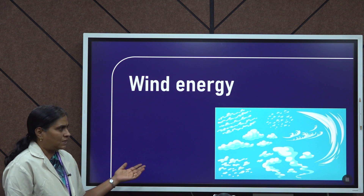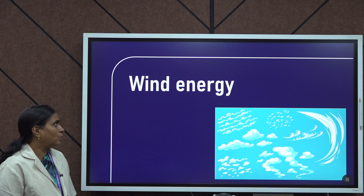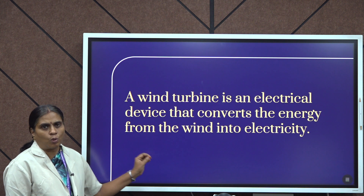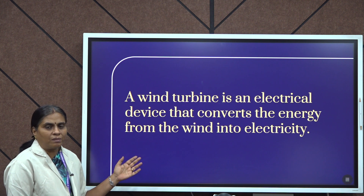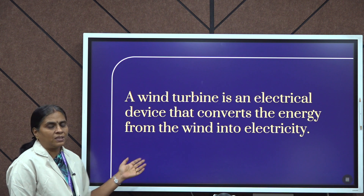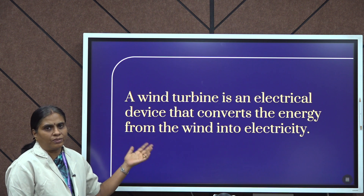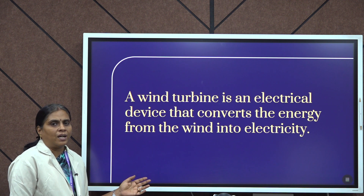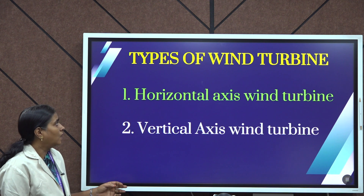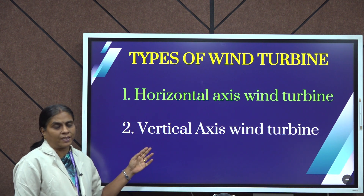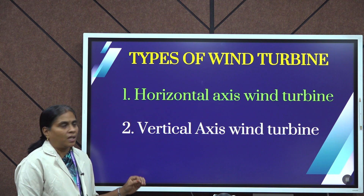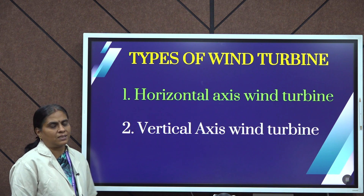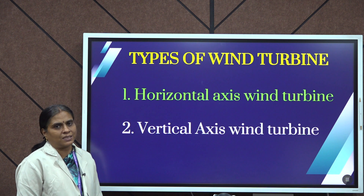Wind formation and related topics were discussed in my previous video. In this video, I am going to discuss about the Vertical Axis Wind Turbine. Wind turbines are used to convert the kinetic energy of the wind into electrical energy efficiently. There are different types of wind turbines: horizontal axis wind turbine and vertical axis wind turbine. In my previous video, I discussed about the horizontal axis wind turbine, and in this lecture, I am going to discuss about the vertical axis wind turbine.